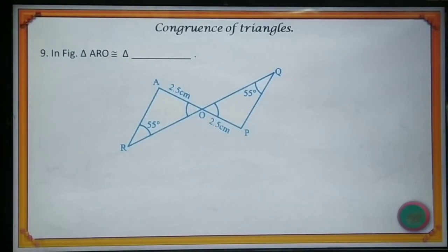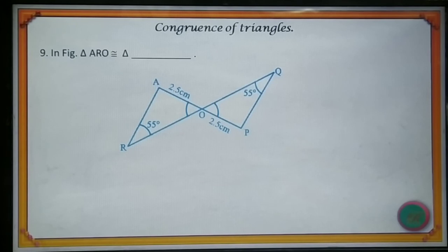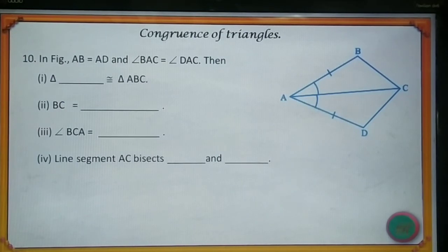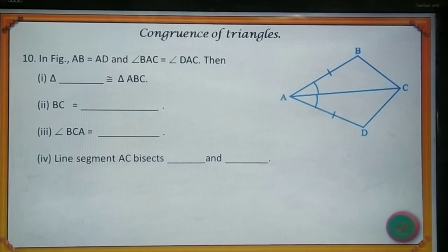Ninth one. In figure, triangle ARO is congruent to triangle PQO. Tenth one. In figure, AB is equal to AD, and angle BAC is equal to angle DAC. Then: number one — triangle dash is congruent to triangle ABC; second — BC is equal to dash; third — angle BCA is equal to dash; fourth — line segment AC bisects dash and dash.